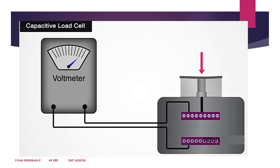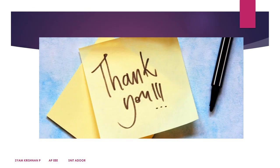The voltage varies based on the weight applied, and we scale that voltage to measure the weight. This is the capacitive type load cell. These are the different types of functionalities or principles of load cells. This concludes the general introduction and basic working principle of load cells.